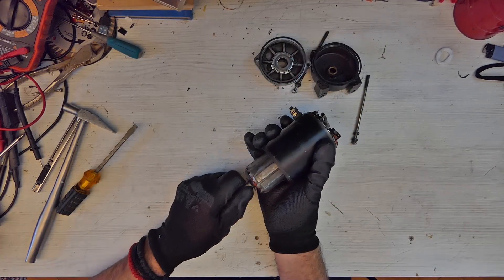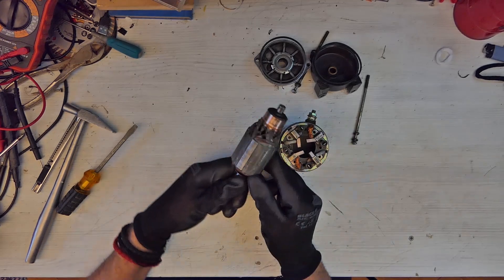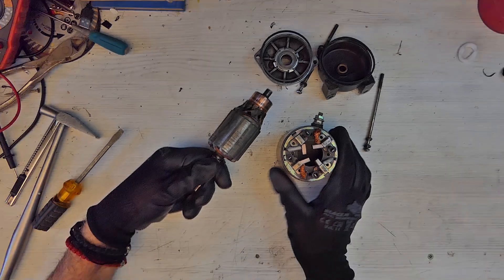Carefully pull out the rotor as the brushes are pressed against the commutator. The commutator consists of small copper plates that supply current to the rotor windings by making contact with the brushes.